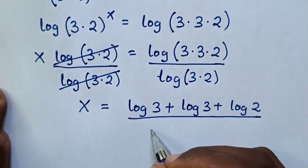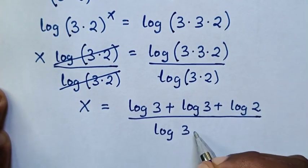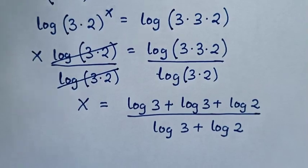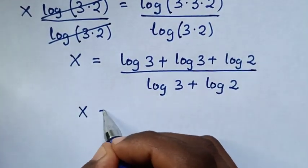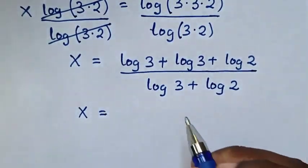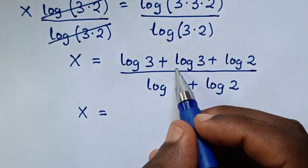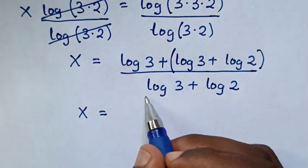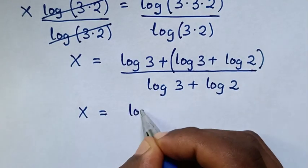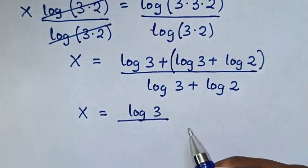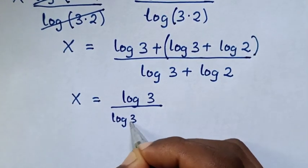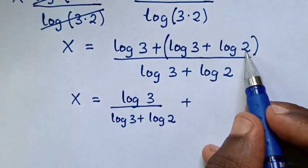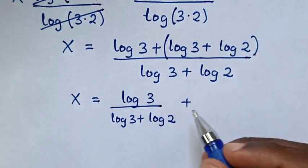Then in the next step, it will be x is equal to log of 3 plus log of 2 in the denominator, and log of 3 plus log of 2 here as well. So placing brackets, then it will be log of 3 over log of 3 plus log of 2, then plus log of 3 plus log of 2 divided by log of 3 plus log of 2, which equals 1.